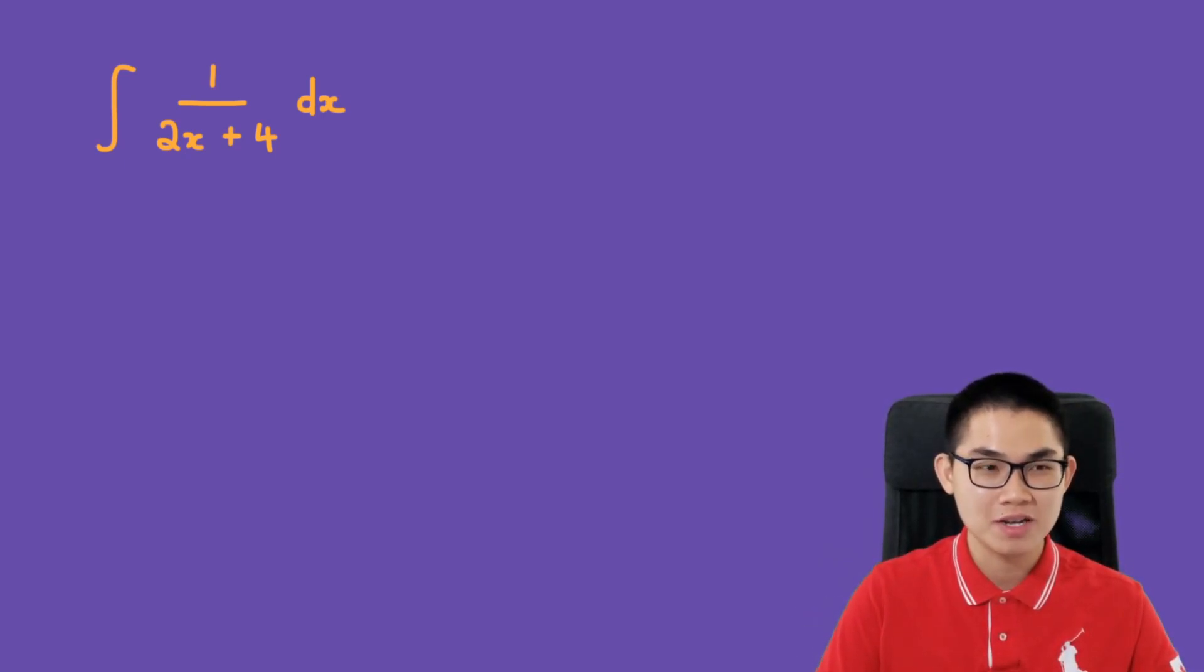Let's start with this problem: What is the integral of 1 over 2x plus 4 dx? The idea behind u-substitution is to make your expression simpler. We can simplify this into 1 over u. Let u equal 2x plus 4, so we can turn the denominator into u.